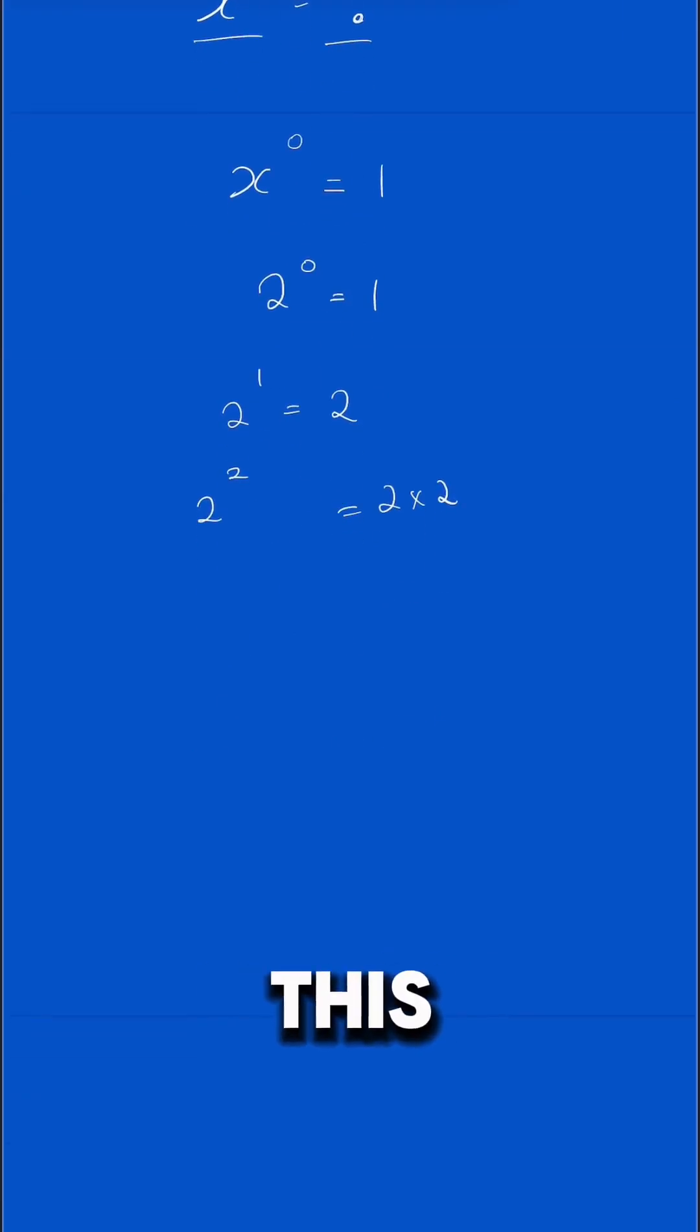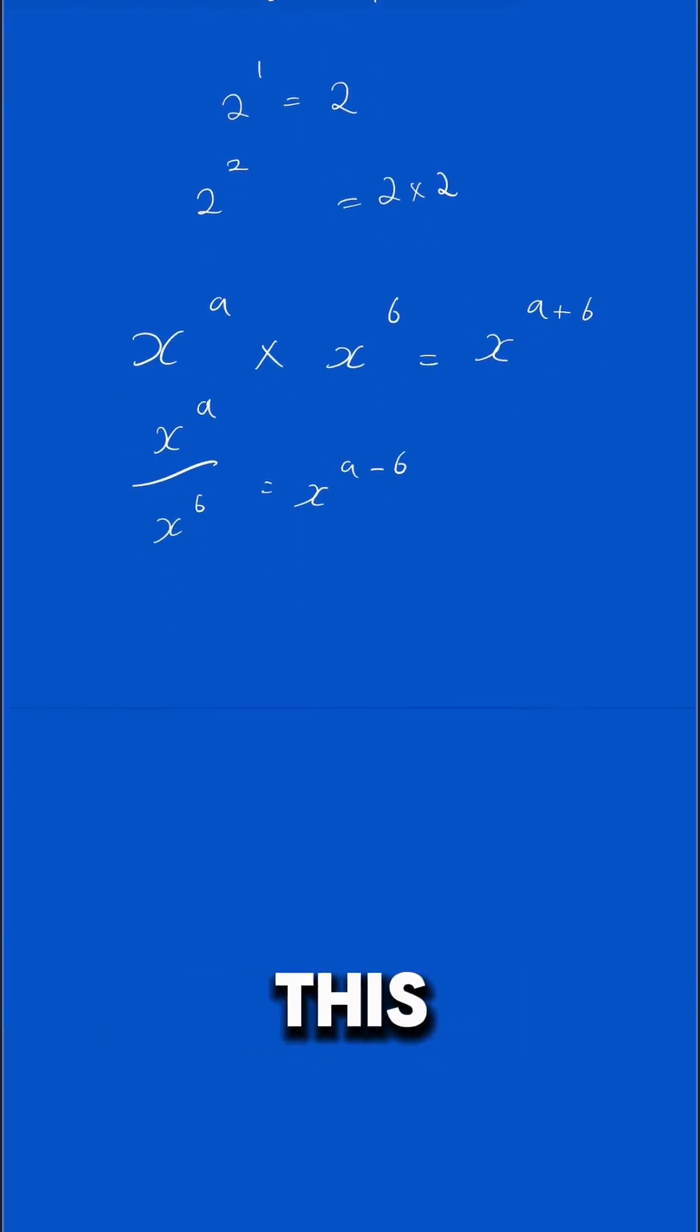Well, let's look at it this way. x to the power of a times x to the power of b is x to the power of a plus b. And if you're dividing them, then you minus the powers. So following that same logic, let's try something like this.